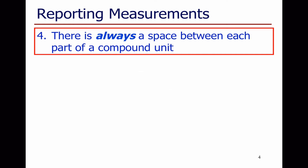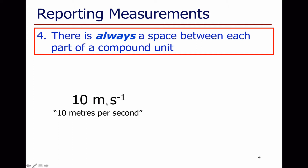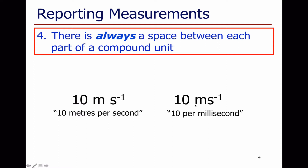But there's always a space between each part of a compound unit. Writing '10 m s⁻¹' with spaces means 10 metres per second. But if you write 'ms⁻¹' with no space, that means per millisecond — so '10 ms⁻¹' would mean 10 per millisecond, not 10 metres per second. Always put a space between each part of a compound unit.